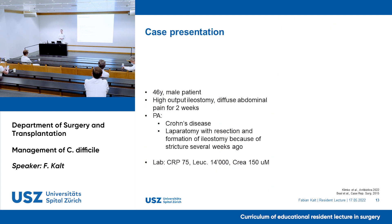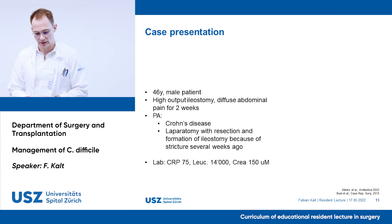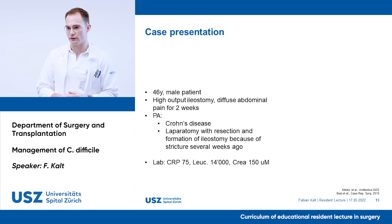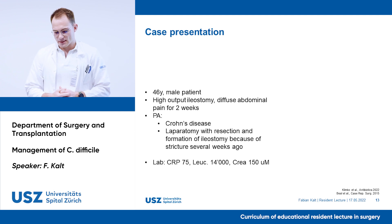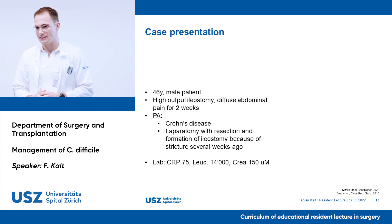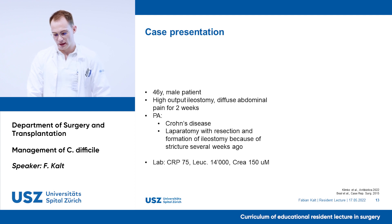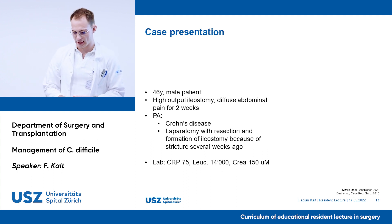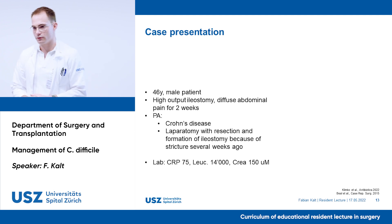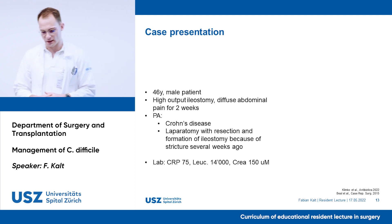Now for a case presentation to get more involved. A 46-year-old male was admitted for high-output ostomy of around 1,500 ml within 24 hours. He had further diffuse abdominal pain worsening over the last two weeks, and lost around 6 kg of body weight. In his personal history, he had long-standing Crohn's disease for which he had undergone laparotomy, resection for a stricture, and formation of an ileostomy several weeks ago. Lab tests showed a CRP of 75, leukocyte count of 40,000, and creatinine of 150, with diffuse abdominal pain on palpation without signs of peritonism.